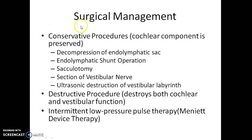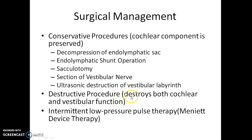Surgical management is divided into three types: conservative procedures, destructive procedures, and intermittent low-pressure pulse therapy. Conservative procedures preserve cochlear function while destroying the vestibular component — examples include endolymphatic sac decompression, endolymphatic shunt, sacculotomy, and section of the vestibular nerve. Destructive procedures destroy both cochlear and vestibular function, for example complete labyrinthectomy. Intermittent low-pressure pulse therapy uses a device called the Meniett device.